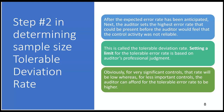Step two in determining sample size is the tolerable deviation rate. Step one was the expected error rate — maybe 2% error is expected in the population. But how much error could the auditor tolerate? What's the highest error rate that could be present before the auditor would feel the control activity was not reliable? The tolerable rate will always be set higher than the expected error rate. This is the limit for how much error can be tolerated in the control in order to say that it is functioning normally.